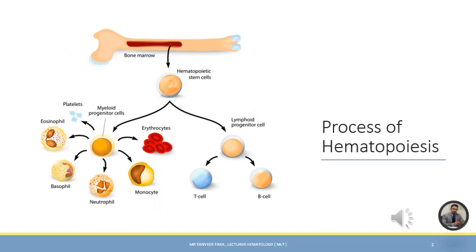Today we will be talking about hematopoiesis and the role of bone marrow. Hematopoiesis is simply the process by which blood cells are made — including white blood cells, platelets, and red blood cells. Hematopoiesis is a general term used for the production of all blood cell lines.